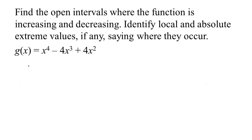Let's look at an example. We have function g and we want to find the open intervals where the function is increasing and decreasing, then find any local or absolute extreme values. Since g is basically x to the fourth, in the long run it heads upward, so there's no absolute max possible, but there will be a minimum because there's a limit to how low this can go.